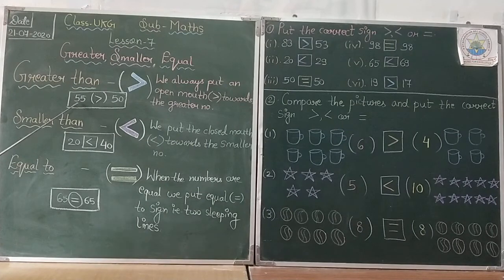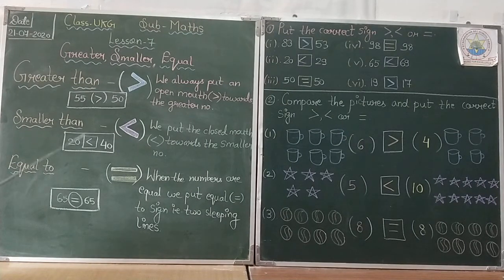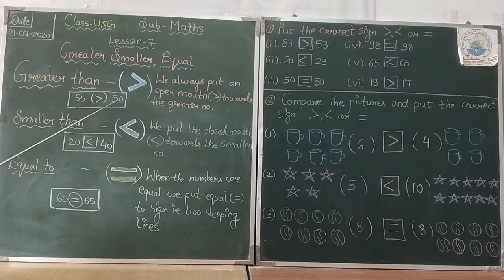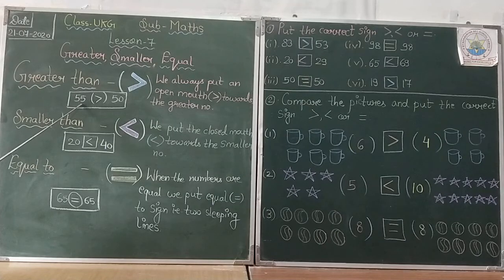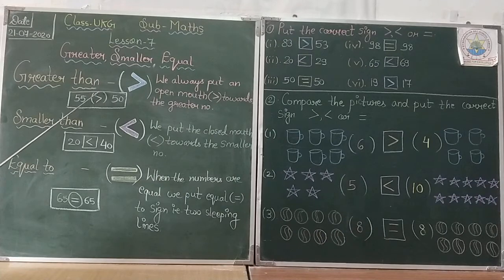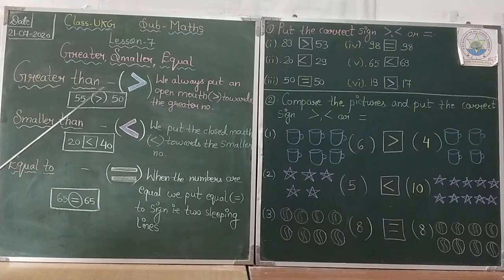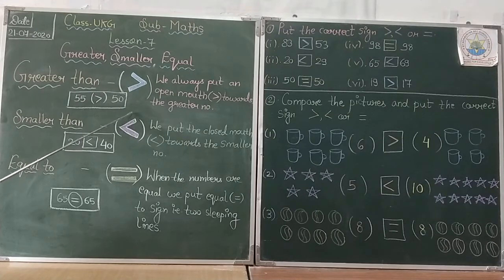For example, you can see here 55 لکھا ہوا ہے اور 50 لکھا ہوا ہے۔ Now tell me which is the greatest number — 55 bada ہے یا 50 bada ہے؟ 55 bada ہے نا؟ So, 55 is greater than 50. تو یہاں پر ہم 55 number کے سامنے یہ والا sign put کریں گے — open mouth، اس کا مو کھلا ہوگا۔